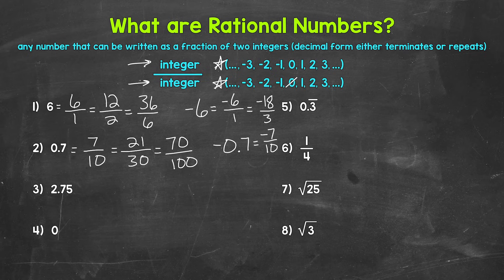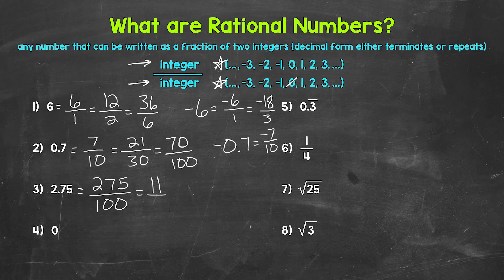Let's move on to number three, where we have 2.75. Similar to number two, we have a terminating decimal, so right away we can tell that this is rational. We can write this as 275 over 100, or even the simplified version, 11 over 4. Just like numbers 1 and 2, negative 2.75 is rational as well — we can write that as a fraction of two integers.